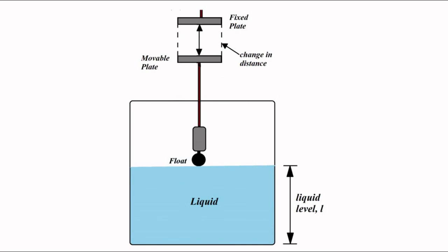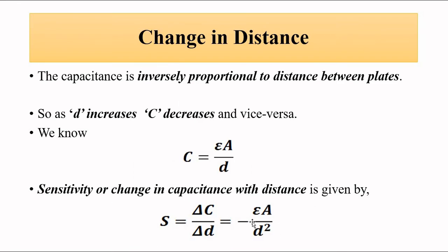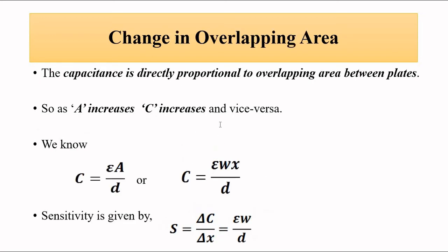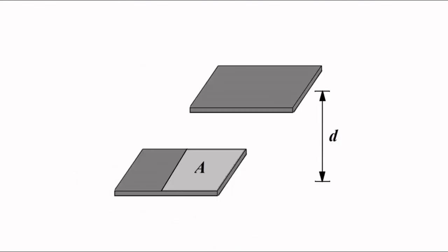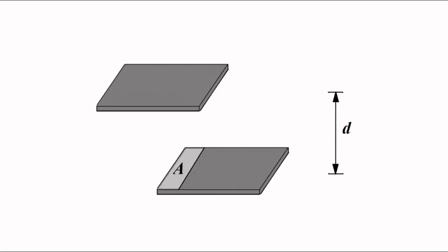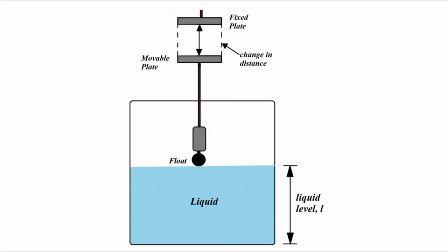Whenever there is a change in distance, sensitivity is given by the relationship of change in capacitance with respect to distance. Whenever there is a change in overlapping area, sensitivity is given by its corresponding relationship. We have already discussed capacitive sensors in detail, so this covers the whole topic related to capacitive sensors for level measurement where overlapping area and distance between the plates are the parameters of interest.